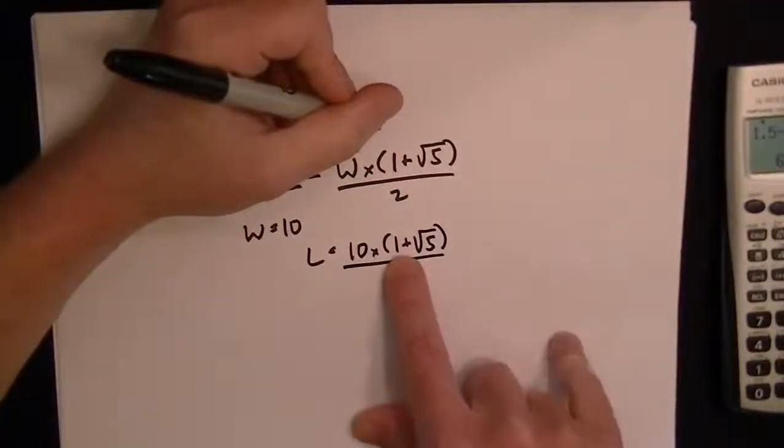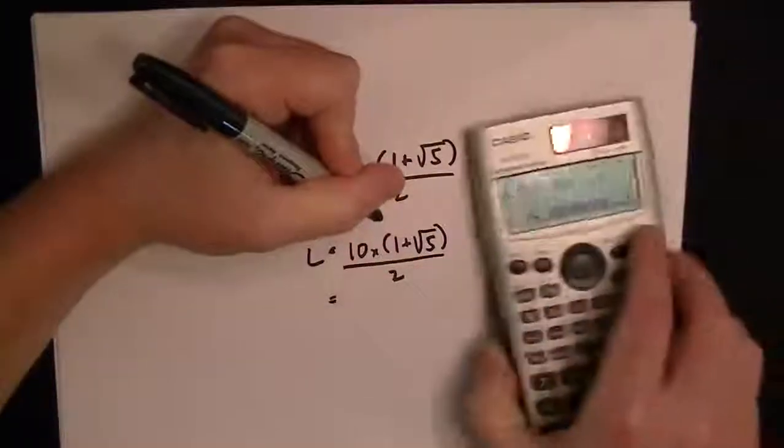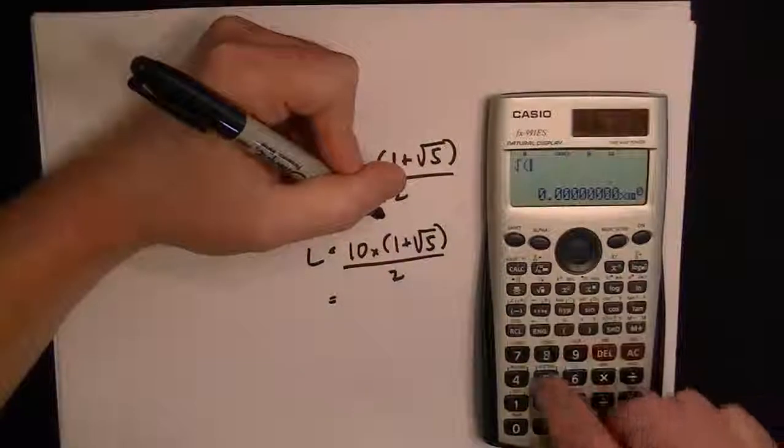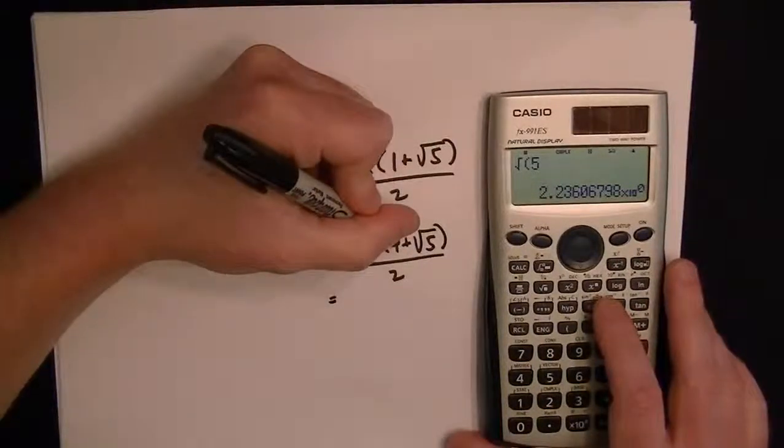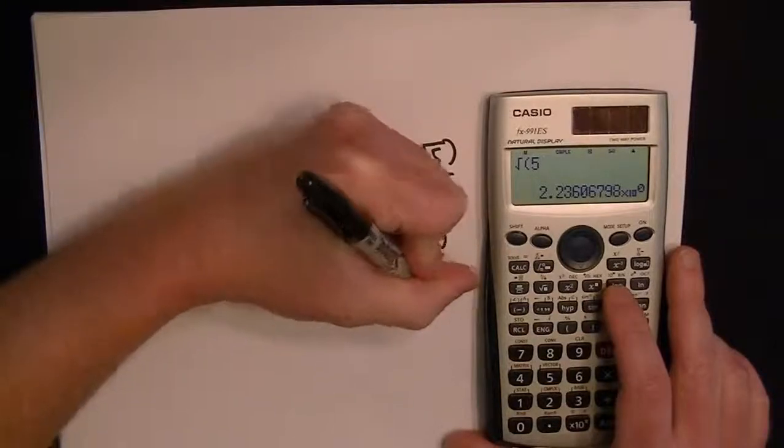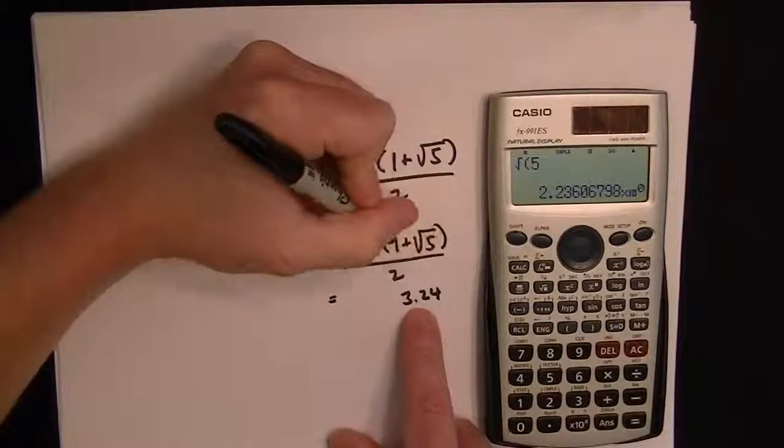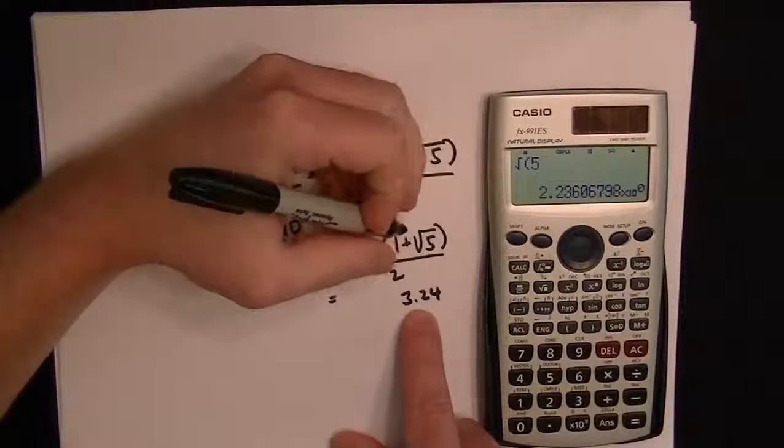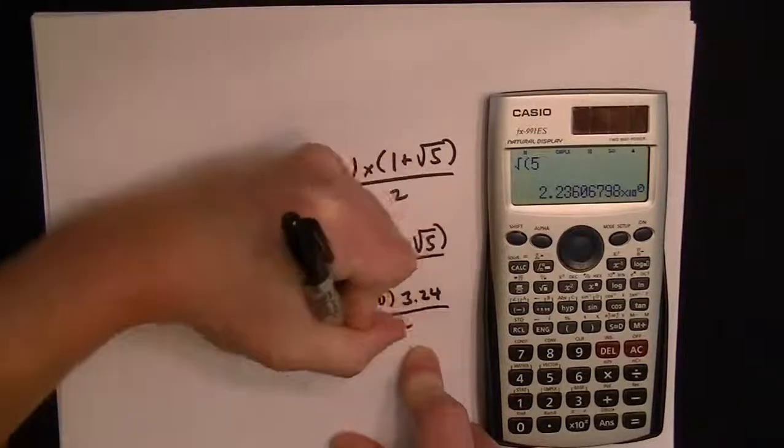So we'll go inside the parentheses first. So the root of 5 is equal to 2.23 plus 1. So we'll just go in steps here. Actually, we'll round it up and say it's going to be 2.24 plus 1 is 3.24 times 10 and then all over 2.